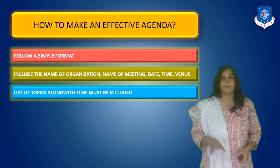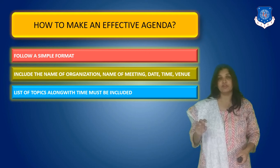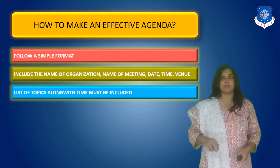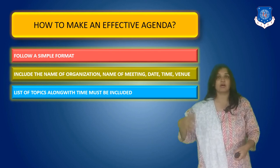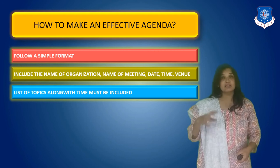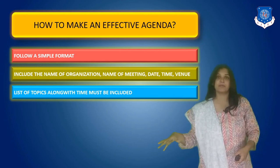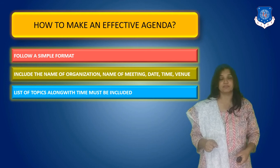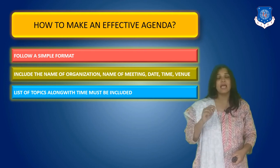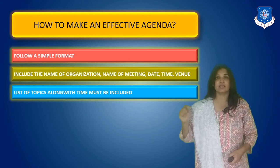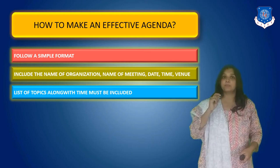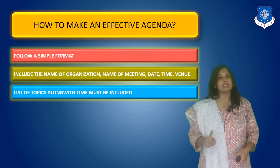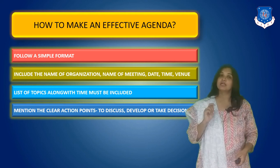This is followed by a list of topics along with the time allotted to each topic. We decide the total duration of the meeting — maybe one hour, two hours, or half an hour. Within that time, how much time should be given to each topic is a very important aspect. Each topic has its own importance, issues, and concerns, so the person writing the agenda must carefully decide the time allotted to each topic.